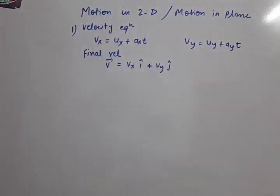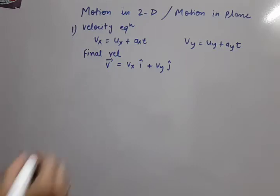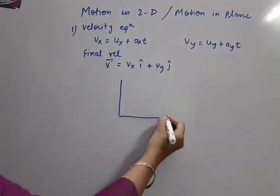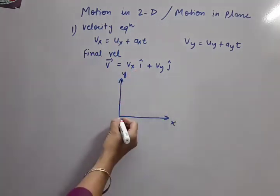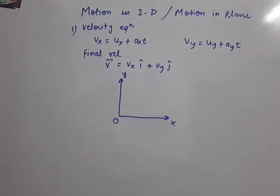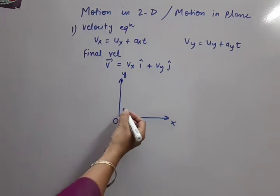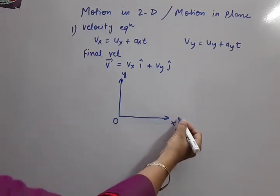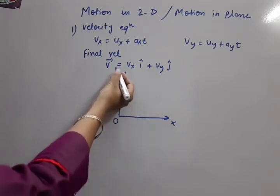Till now, whatever equations of motion we were using for the straight line — like v = u + at or s = ut + ½at² — we were using those for the straight line. Now the object is moving in two dimensions. Two-dimensional motion means the object is not restricted to move in the x-axis only, or it is not restricted to move in the y-axis only.